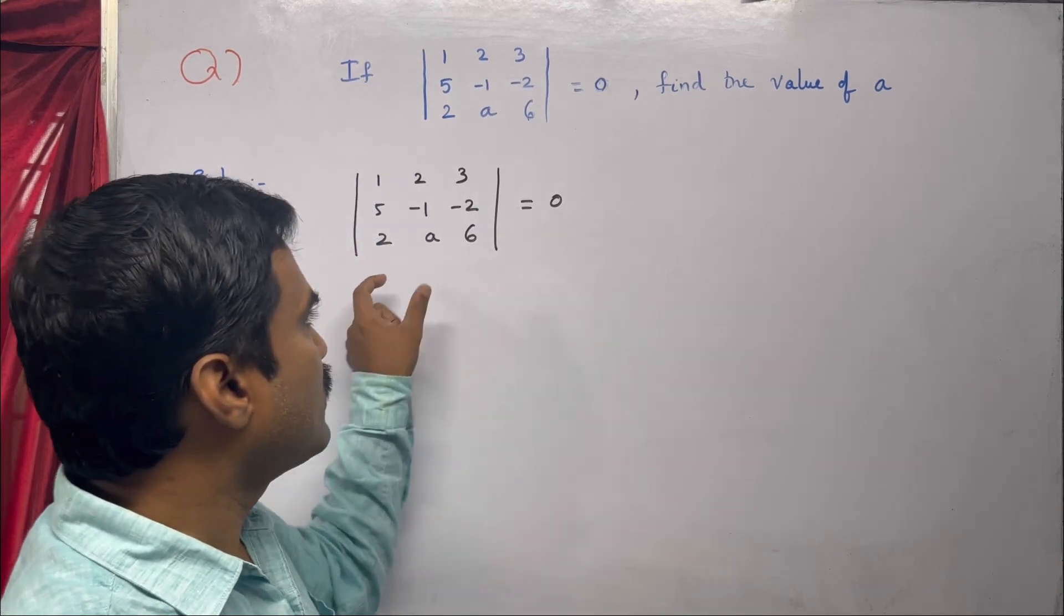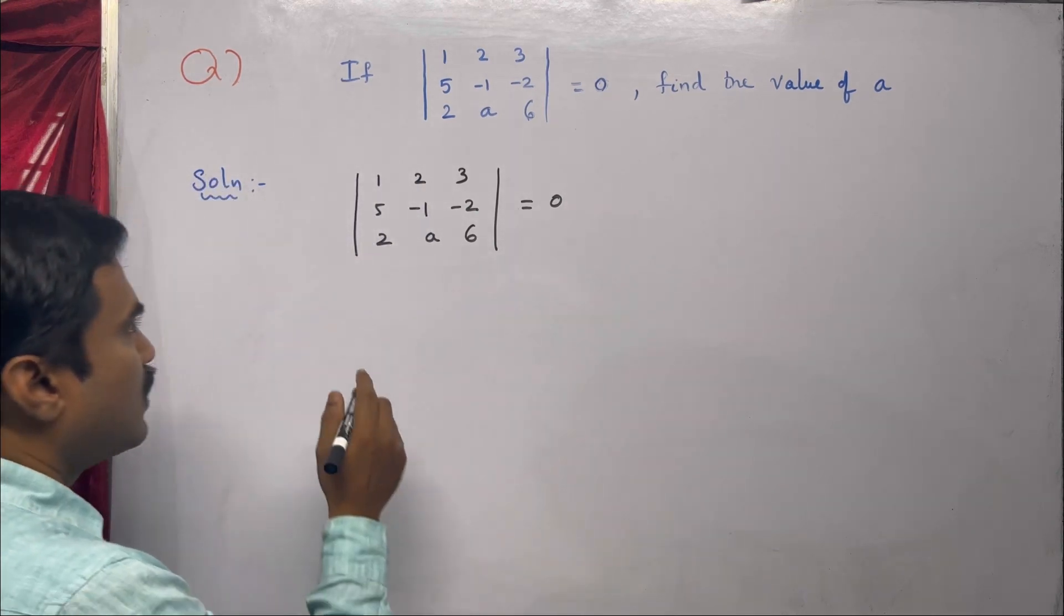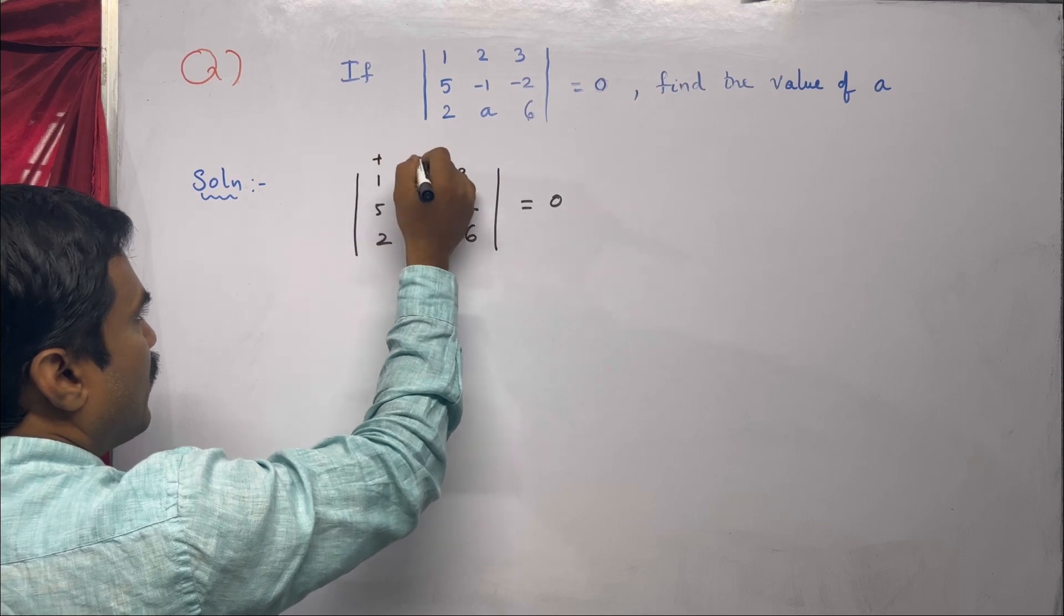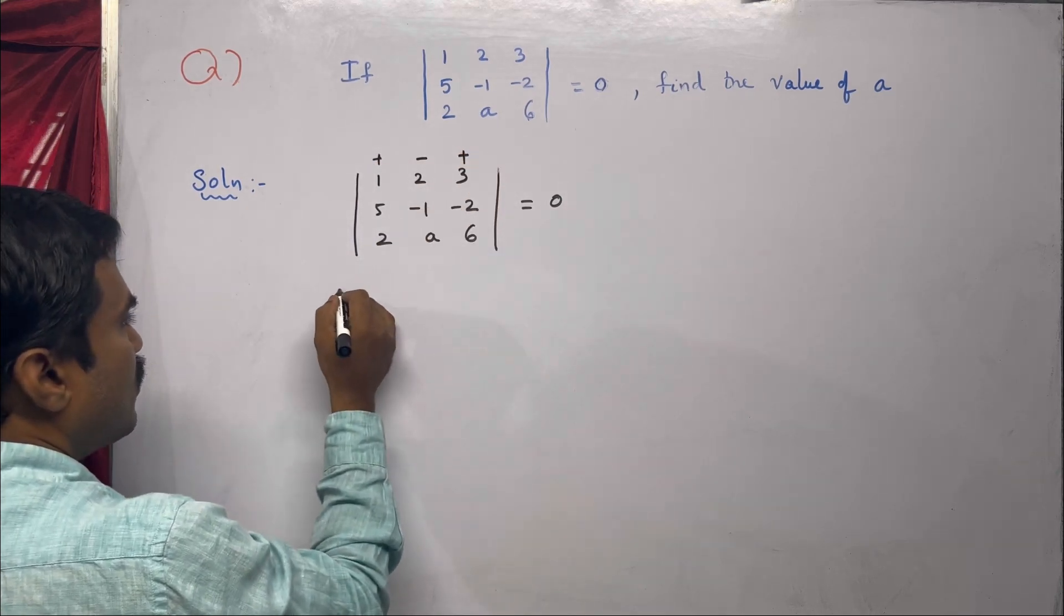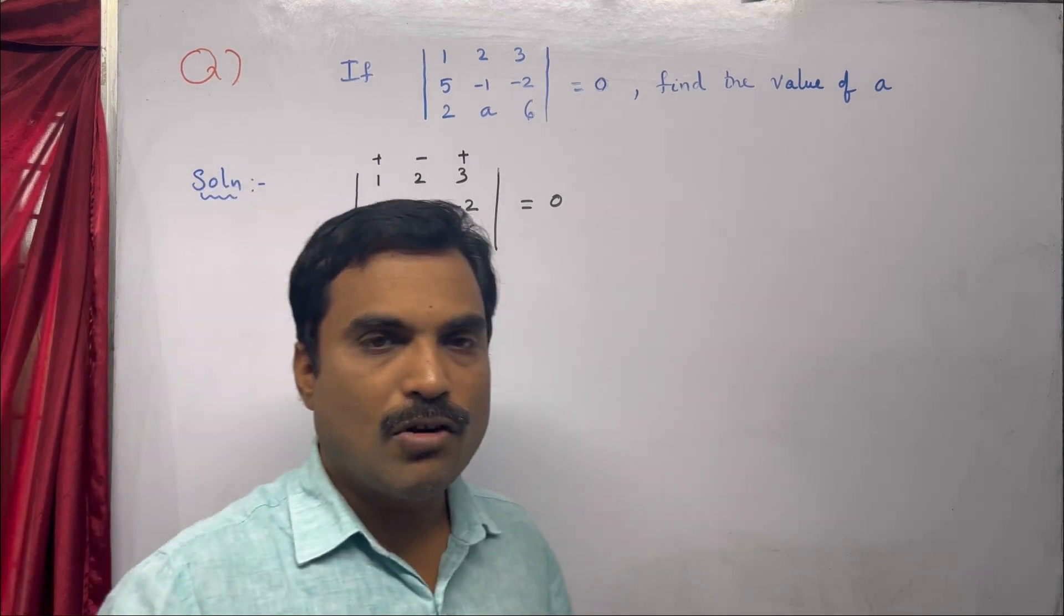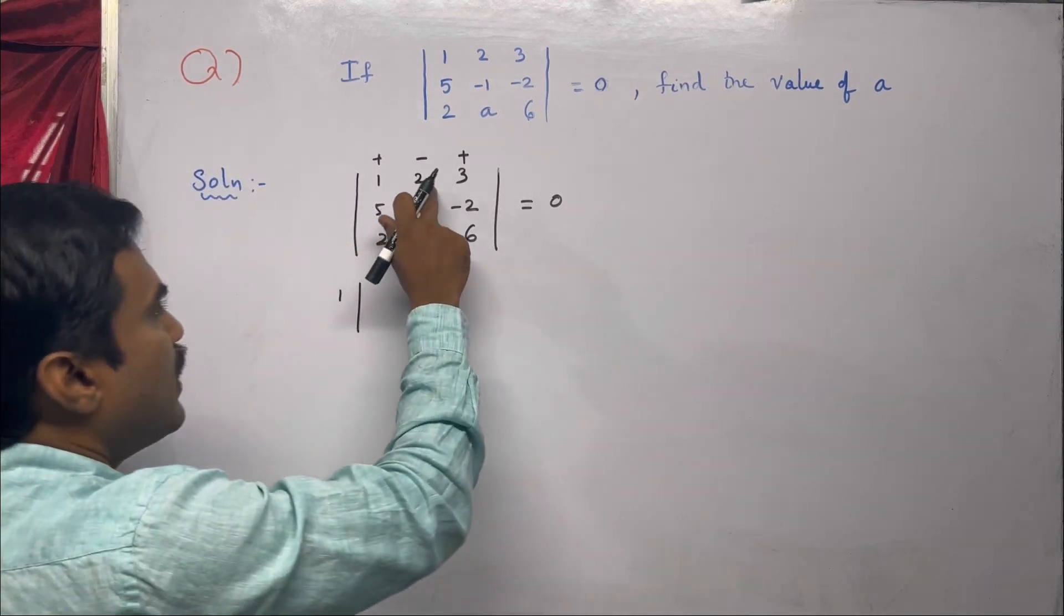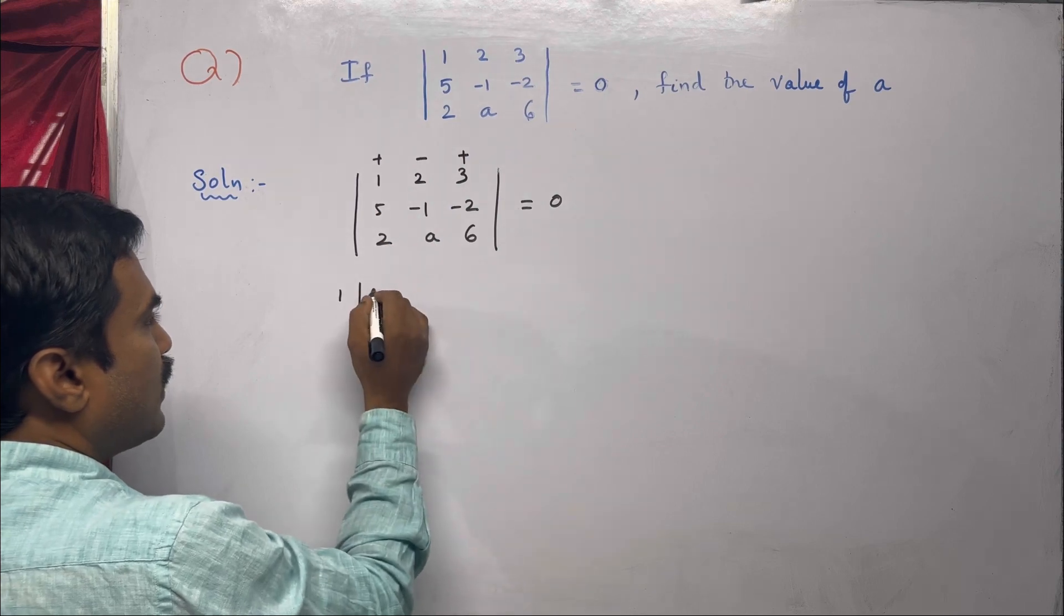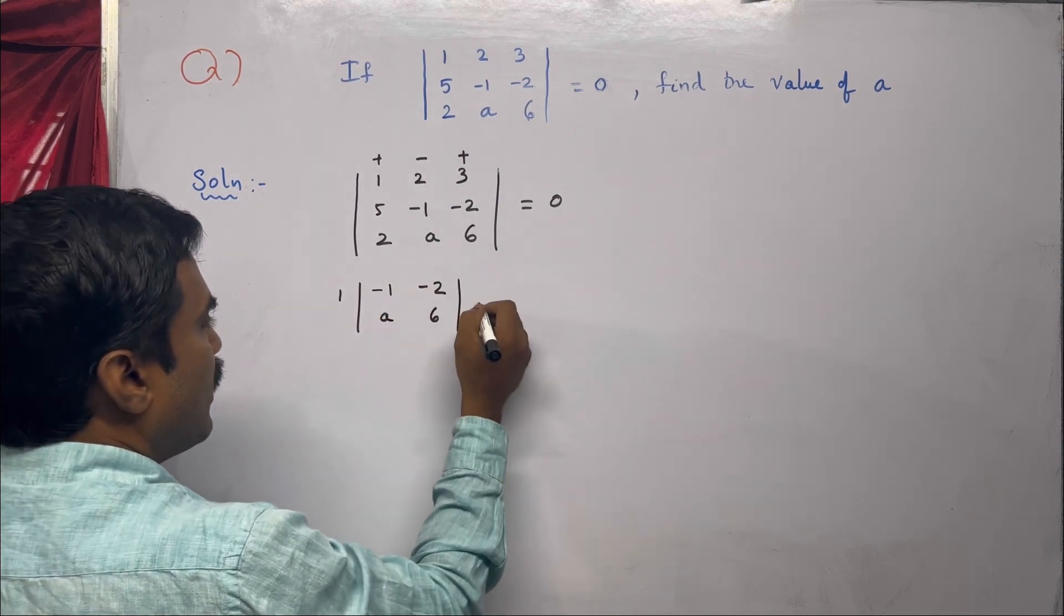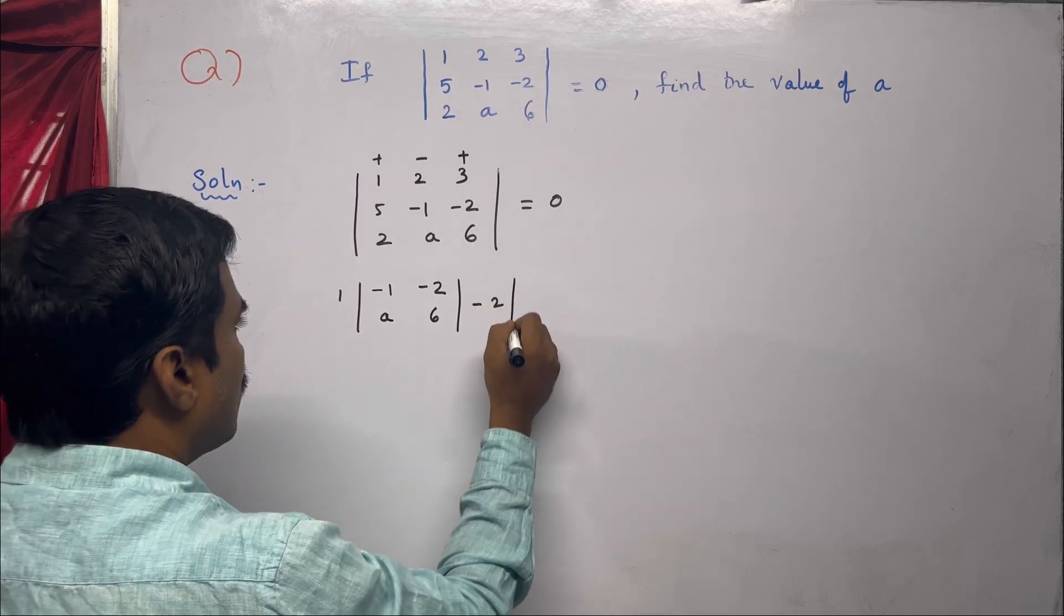To simplify this 3x3 determinant, we use cofactor expansion. We start with 1, which is in the first row, first column. We leave the elements of the first row and first column and take the remaining elements: -1, -2, a, 6.